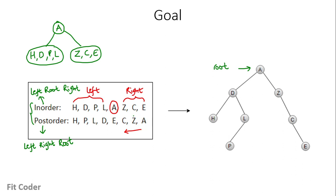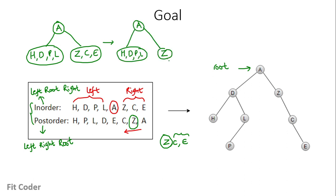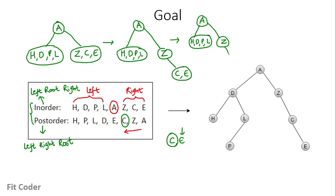In the next step we pick the next node in the postorder traversal, which is Z. Z is part of the right subtree (Z, C, and E). So left of Z is null and right of Z is C, E. Z is the root node and we further split it into C and E. Then we pick C — left of C is null and right of C is E. Then we pick E, which is a child node and the only node in the subtree, so there is no need to break it down further.